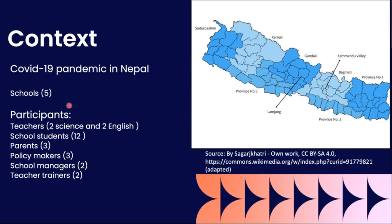The data was collected from five schools, and participants were teachers — two science and two English teachers — secondary level school students, 12 of them, three parents, three policymakers, two school managers (the school heads), and two teacher trainers.